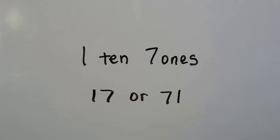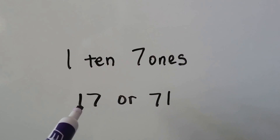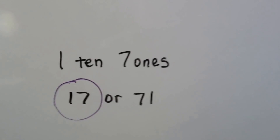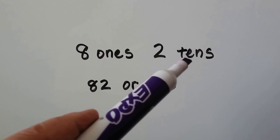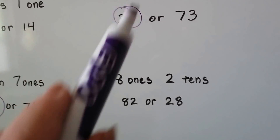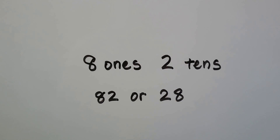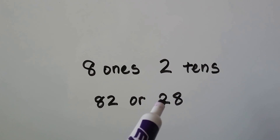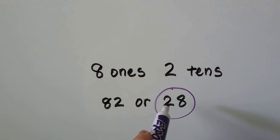How about this one — one ten and seven ones. Is it this number or this number? Remember, the tens place is right here and that's the ones place. If you said this one, you're correct — it's seventeen. Now be careful, this one might trick you. It says eight ones and two tens. The ones are coming first, not the tens. Is this the correct number or is this the correct number? If you said this one, you're correct, because the tens place is always on this side even if the words are written in a different order.